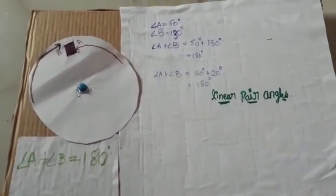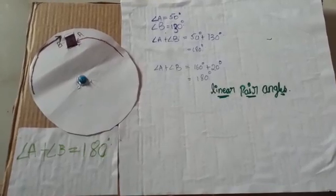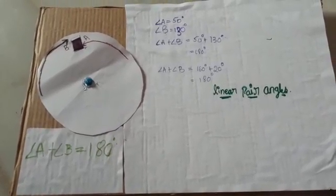There is a real life example of linear pair which is a ladder placed against a wall forms linear angles to the ground.